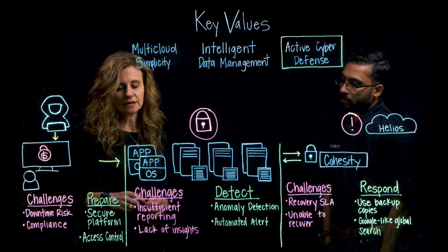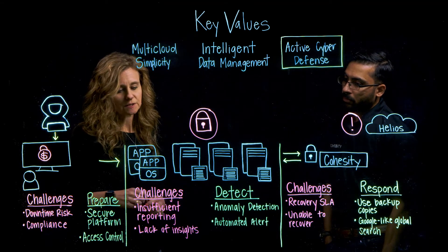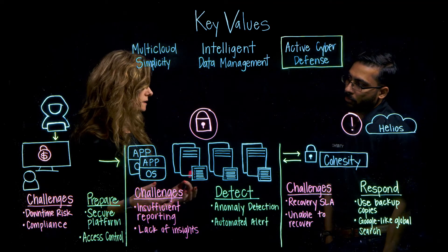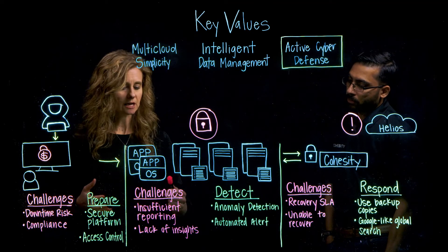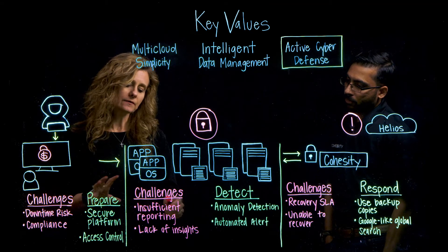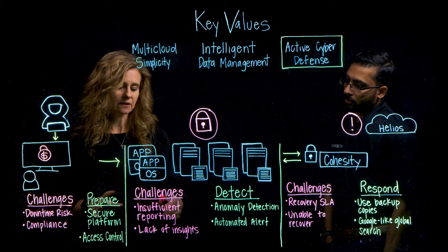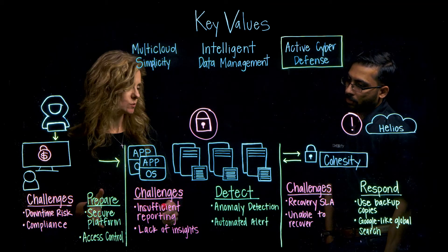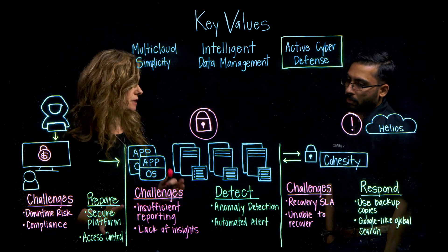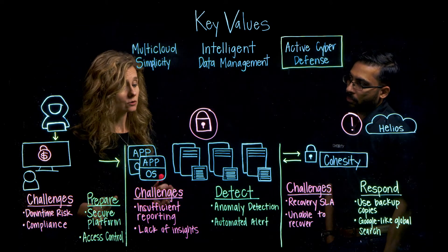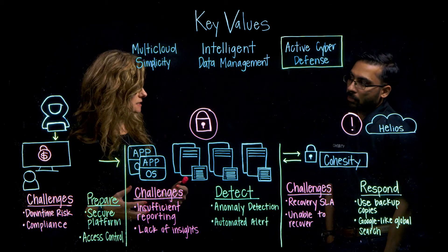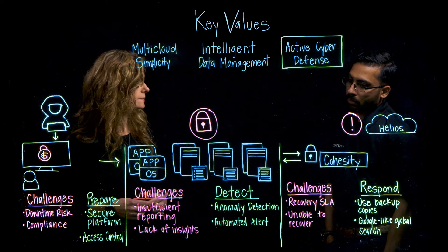Now let's talk about the next set of challenges, which revolves around ransomware and anomaly detection. Oftentimes traditional file and object systems don't have any reporting capabilities or insights into data modifications at all. Can you talk a little bit about how Smart Files looks at data differently to help in this area?